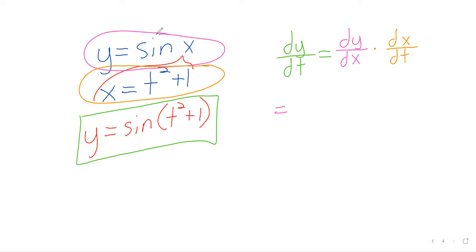dy/dx, we hopefully have all these trig derivatives down. But if not, we certainly need the sine and the cosine down. The derivative of the sine is the cosine. dx/dt. Again, we're hopefully pretty handy with the power rule right now. So the derivative of t squared plus one is 2t.